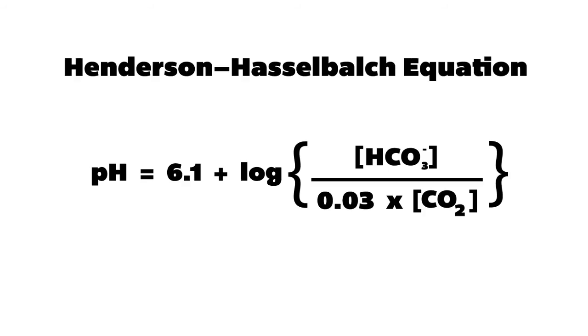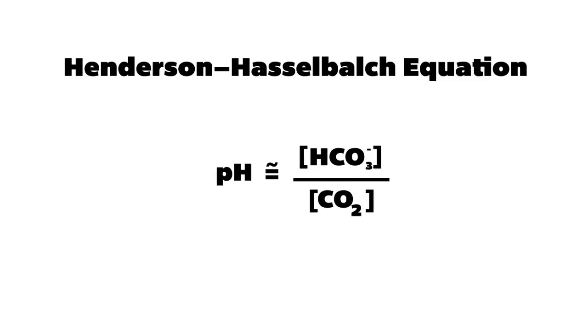This leads us to the Henderson-Hasselbalch equation, which is another equation which you don't really need to remember except for the relationship between bicarb and CO2. As the amount of bicarb in the body increases, pH also increases. As the concentration of bicarb decreases, so does the pH. Note that the relationship here is that pH is directly proportional to bicarb.